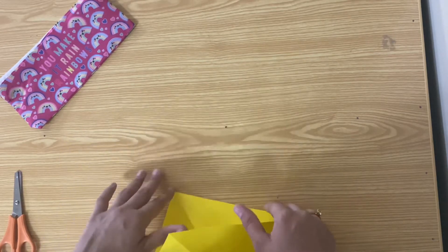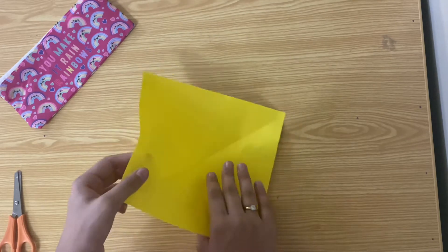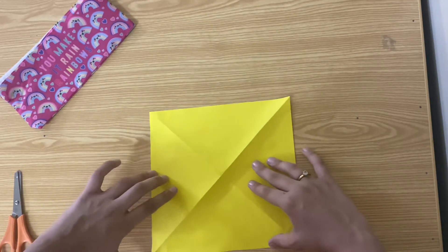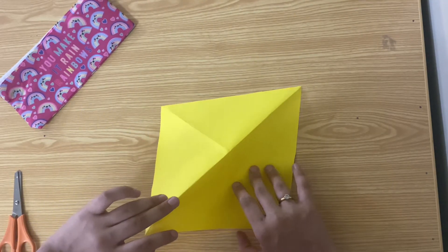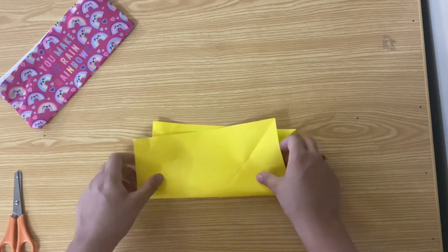Now open it up, go to the backside, and here you're going to make your rectangle, like this.